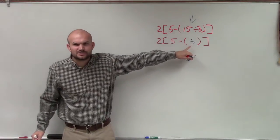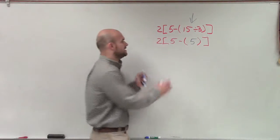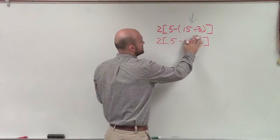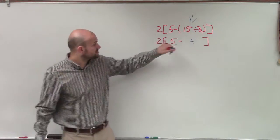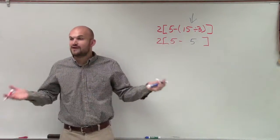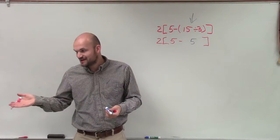All right, now inside this parentheses, do I need to do any operations? Can I do any operations with 5? No, it's just the number, right? So I can actually get rid of now my parentheses. So now I only have one more grouping symbol left, which is 5 minus 5. And 5 minus 5 is 0.